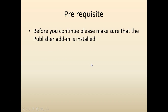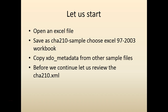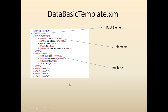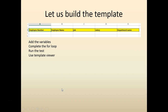Before we continue, let's make sure all the required add-ins are installed. The zip file is available right below this video for download, and it will have all the files at different stages for you to play with. We will start by copying the XDO metadata — you can name it anything. We'll look at the basic template and the data sample we're going to use. The data can have a root element, multiple elements as attributes, and 'num' is an attribute.